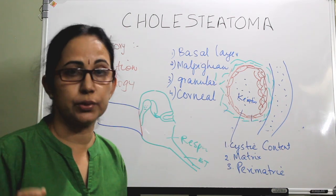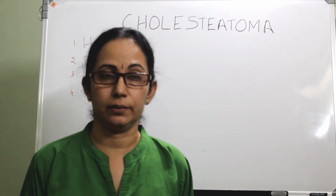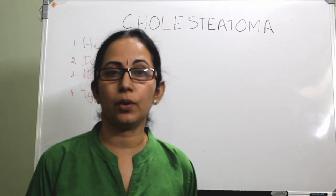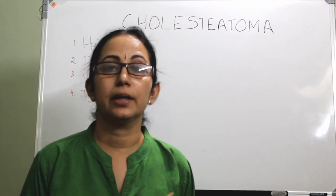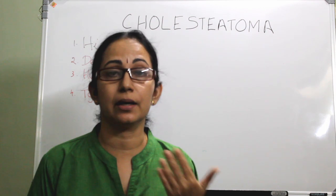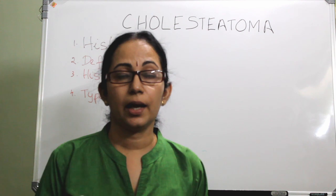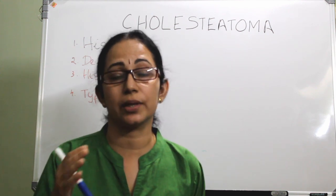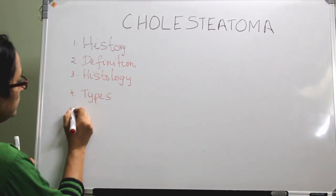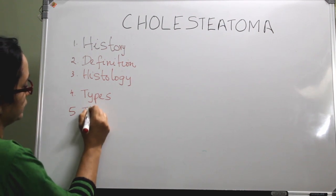The types of cholesteatoma: it is divided into congenital and acquired. Acquired is further divided into primary acquired, secondary acquired, and — as some classify — tertiary acquired, which is caused by implantation or iatrogenic causes such as after inserting a ventilation tube or after performing an overlay myringoplasty.